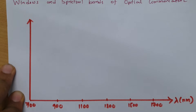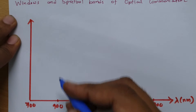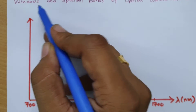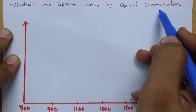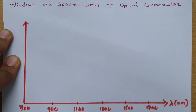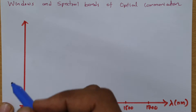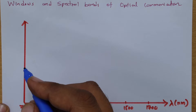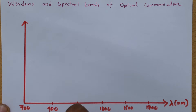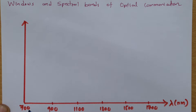Welcome to Optical Communication Playlist. In this session, I'll be explaining Windows Spectral Bands of Optical Communication. I'll be discussing different windows of optical communication with major key components of optical fiber — fiber, light sources, photodetector, and optical amplifier — and how the history has evolved in optical communications.